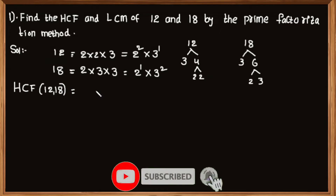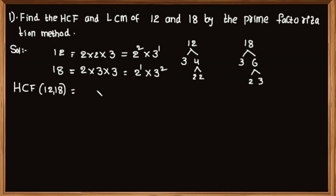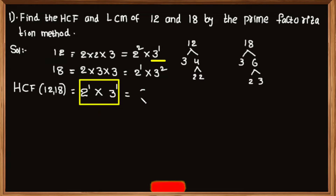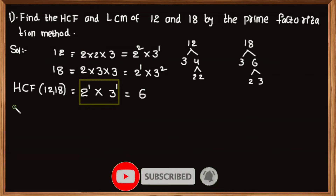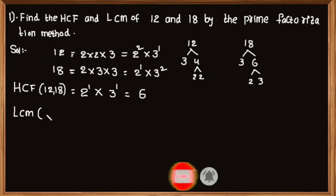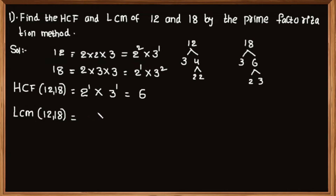The product of smallest powers of common prime factors is known as HCF. So HCF of 12 and 18: here 2 and 3 are common prime factors, which have the smallest powers. By multiplying them we get HCF, so HCF of 12 and 18 is equal to 2 to the power 1 multiplied by 3 to the power 1, that is equal to 6.